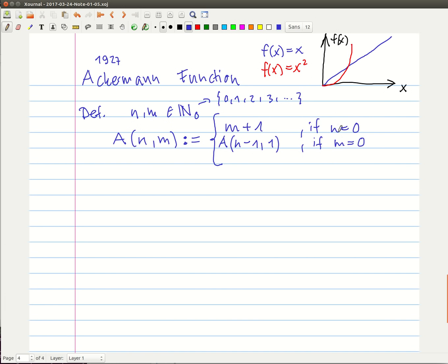And the last case, if those statements aren't true, this is the more ugly looking thing: A of N minus one, and then you have in the argument M, you have a recursive call of the Ackermann function again, A of N, M minus one, else.